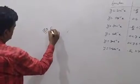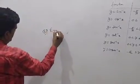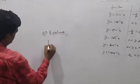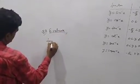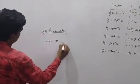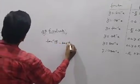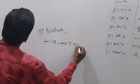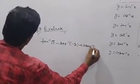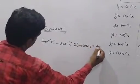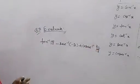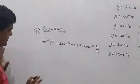Question number 2: evaluate tan inverse root 3 minus sec inverse minus 2 plus cosec inverse of 2 by root 3.